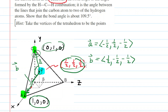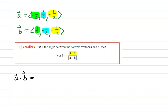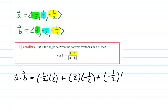Once we have these two vectors, we can begin to find the angle between them using the dot product formula. To calculate A · B, we multiply the x components, multiply the y components, and multiply the z components, then add them together. Multiplying the x components: (−1/2)(1/2); plus the y components: (1/2)(−1/2); plus the z components: (−1/2)(−1/2). Simplifying, the dot product equals negative 1/4.